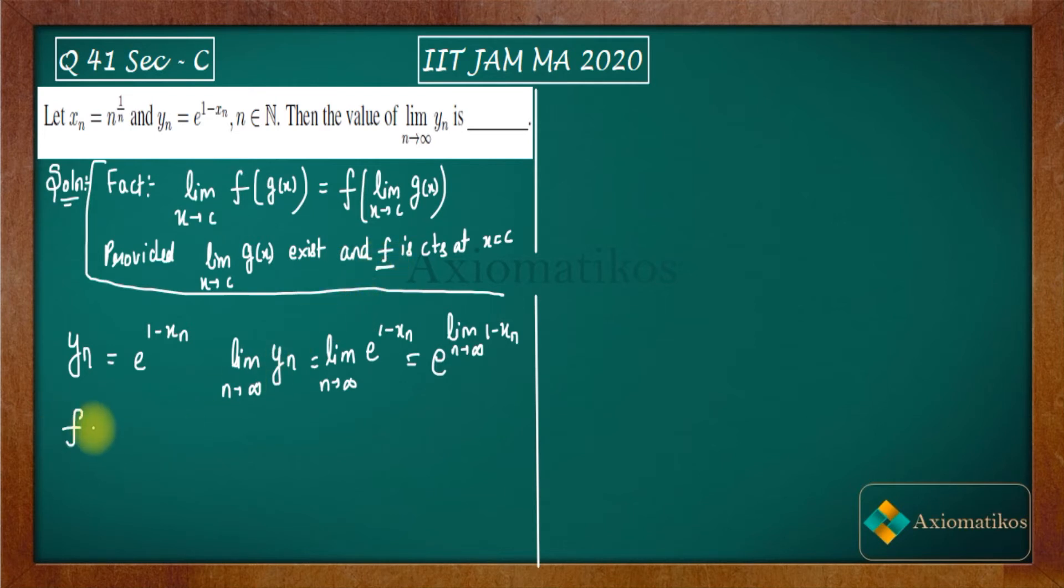Now what is your F in your case? Your F is E to the power 1 minus X. We know that this is a continuous function. And what is your GX? GX is XN is equal to N to the power 1 by N. This function is your GX function. So now let us evaluate its limit.